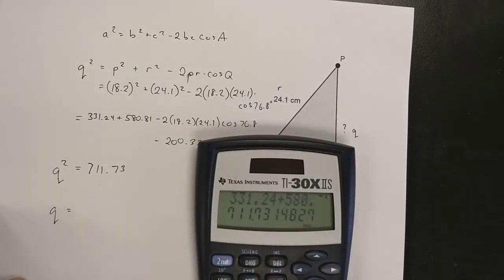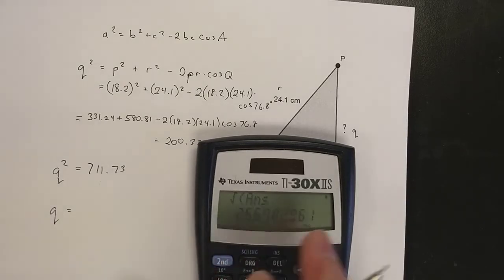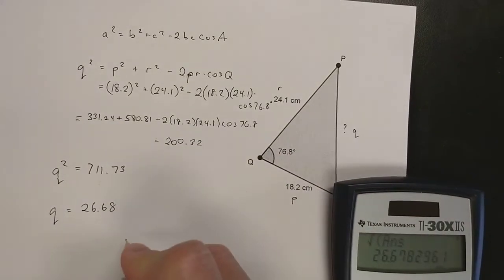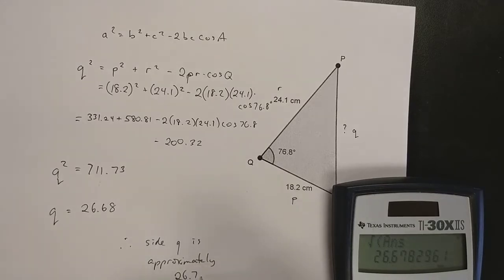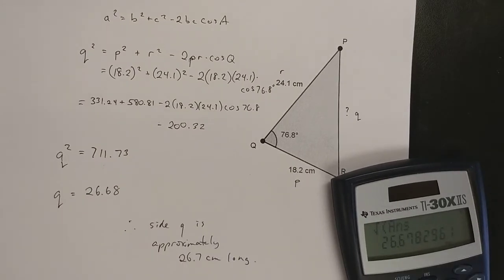The square root of my 711, find the square root button, square root of that answer equals 26.68. Therefore, side q is approximately 26.7 centimeters long. And there we go.